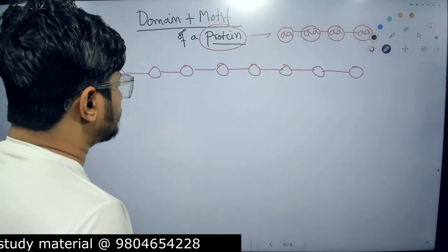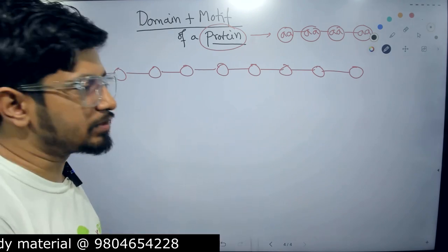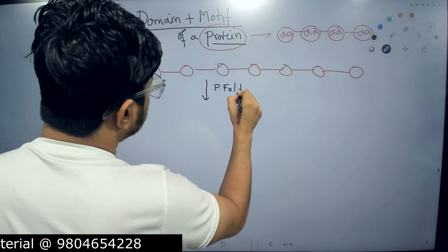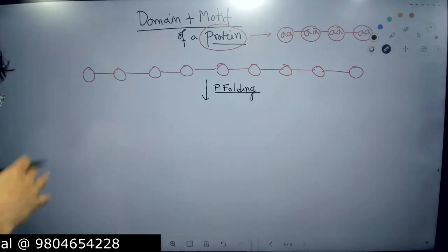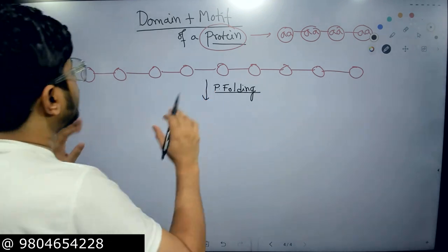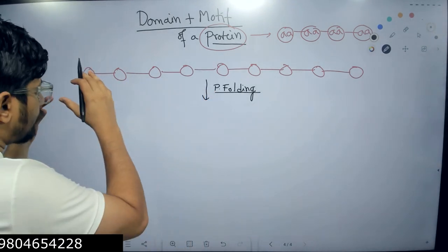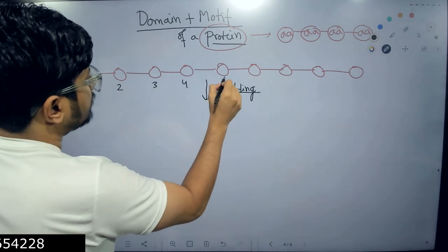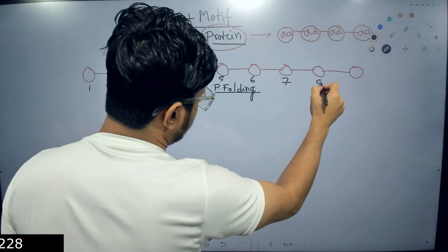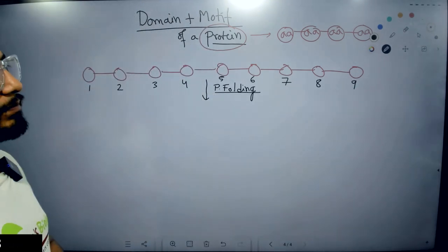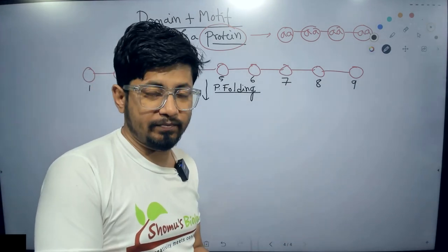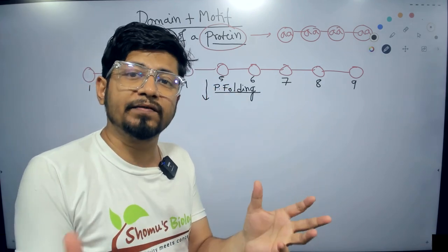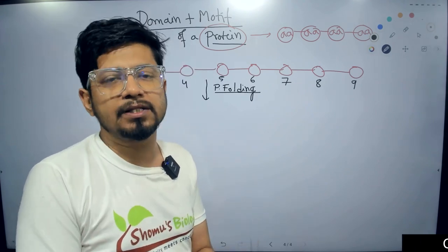The primary sequence of amino acids needs to be folded in order to accommodate itself inside the cell. Protein folding will be discussed in a different video. This folding requires interactions between amino acids — not necessarily between adjacent ones, but amino acid number one might interact with the sixth, eighth, or ninth one. These interactions differ in different proteins, resulting in structurally different proteins from the same primary structure.